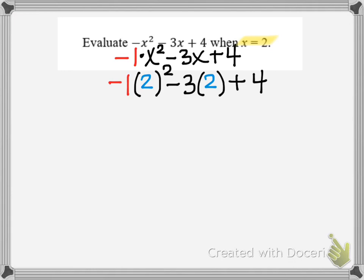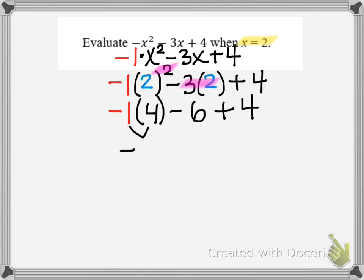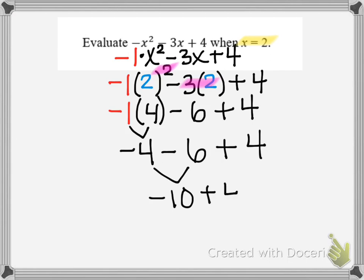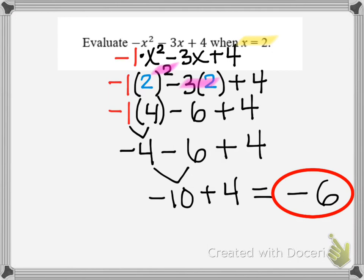Now I'm at my numerical expression and I just follow order of operations. The first step is parentheses, but remember that means what's inside the parentheses — there's only 2's inside, so there's nothing to do inside. My next step is exponents: I do the base of 2 squared, while the negative 1 coefficient is still out front and hasn't been used yet. So negative 1 gets multiplied by the 4 I get from 2 squared. Then I multiply 3 times 2, giving me minus 6, and then plus 4. That gives me negative 1 times 4, which is negative 4, minus 6, plus 4. I do these left to right: negative 4 minus 6 is negative 10, then adding 4 gives a final answer of negative 6.